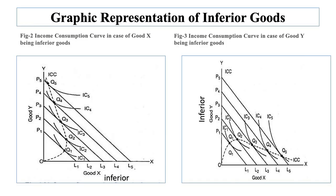Now we will study the graphical representation of inferior goods. In case of inferior goods, the indifference map would yield an income consumption curve that either slopes backward — that is, toward the left as shown in figure 2 — or downward to the right as in figure 3. It would be noticed from the two figures that income effect becomes negative only after a point, signifying that only at higher ranges of income do some goods become inferior, and up to a point their consumption behaves like those of normal goods.